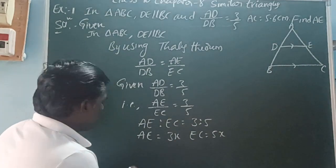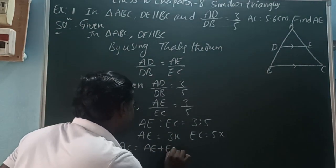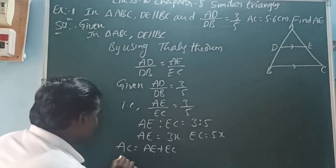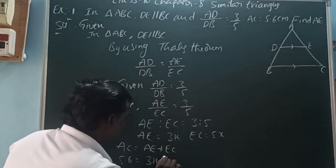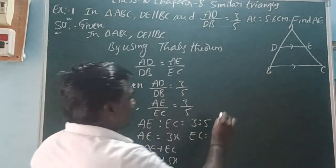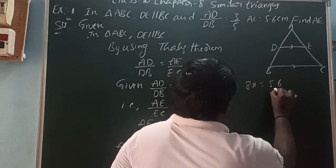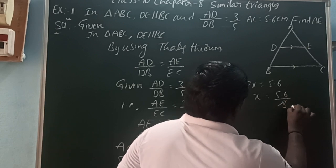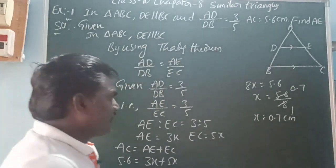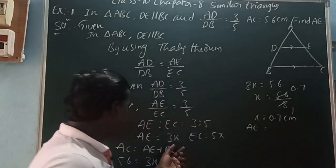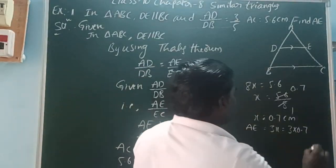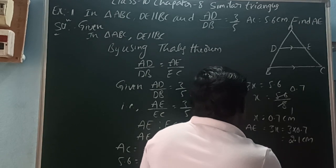Since AC equals AE plus EC, we have 5.6 equals 3x plus 5x, which gives 8x equals 5.6. Therefore x equals 5.6 divided by 8, which is 0.7 centimeters per part. AE equals 3x, that is 3 into 0.7, which equals 2.1 centimeters.